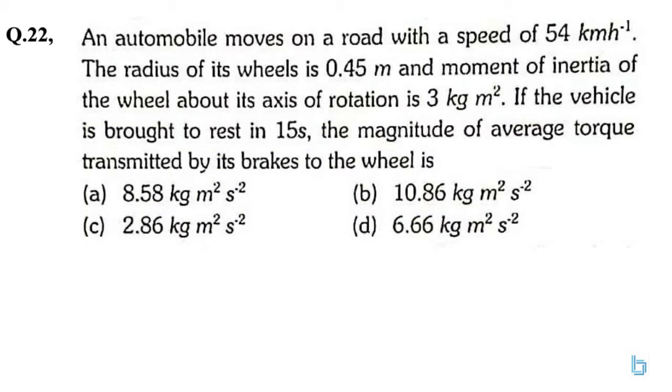Automobile moves on a road with a speed of 54 km per hour. The radius of its wheel is 0.45 m and moment of inertia of the wheel about its axis of rotation is 3 kg m². If the vehicle is brought to rest in 15 seconds, the magnitude of average torque transmitted by its brakes to the wheelers.